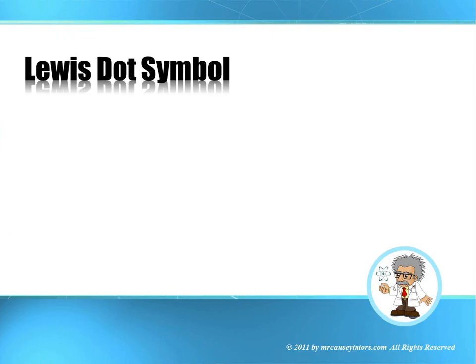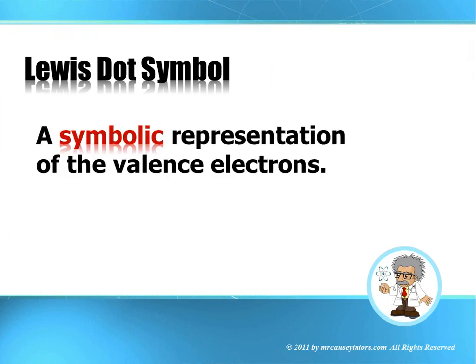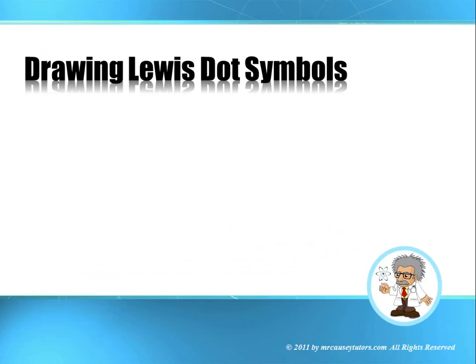Lewis dot symbols. Now we know about the valence electrons. Once we know the valence electrons, we can do Lewis dot symbols. And Lewis dot symbols are a symbolic representation of the valence electrons. Not all the electrons. Just the valence electrons. And that means 2 S's and 6 P's in there.